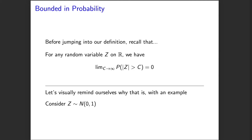Before jumping into the definition for a sequence to be bounded in probability, let's think a little bit about single random variables. There's a really important fact we are going to use to motivate the definition of bounded in probability: for any single random variable z that takes values in the reals, as we consider values c larger and larger, the probability that our random variable z exceeds c in absolute value necessarily converges to zero.